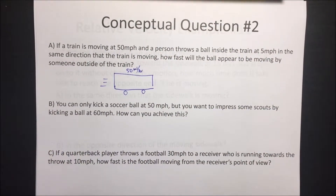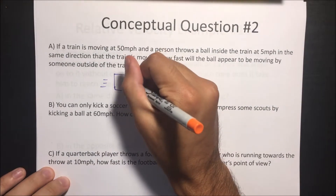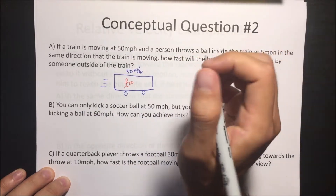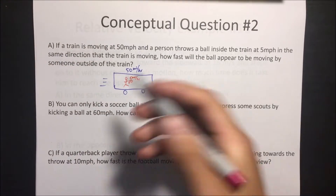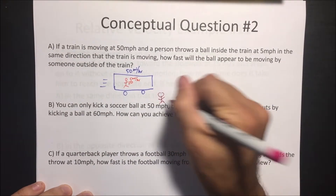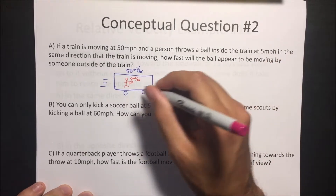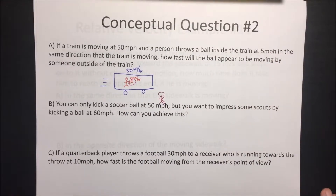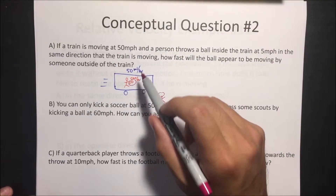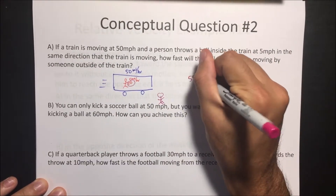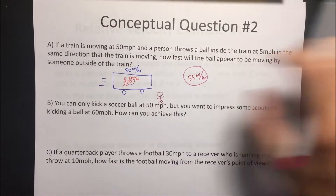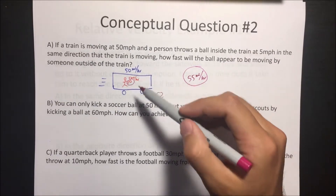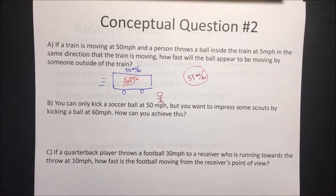Inside the train we have a person throwing a ball at 5 miles an hour. Let's say this is a glass train — to the person outside the train who's not moving at all, how fast is this ball going to look like it's going? It would look like it's going 50 plus 5, so it would look like it's going 55 miles an hour. If the person was just holding the ball, it would look like it's going 50 miles an hour, but when he throws it, now it looks like it's going 55 miles an hour.